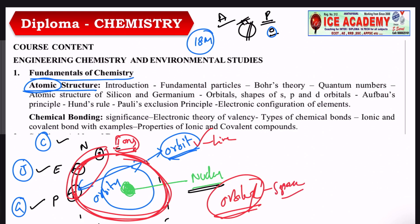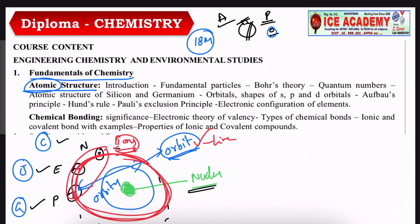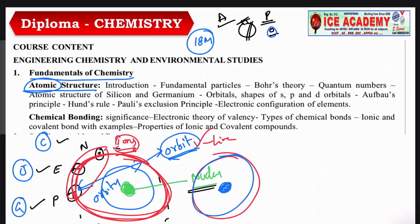The nucleus is at the center. Around the nucleus are the orbitals. Inside the atom we have proton, electron, and neutron. Definition clear? Every object has a number of atoms, and each atom has a nucleus.